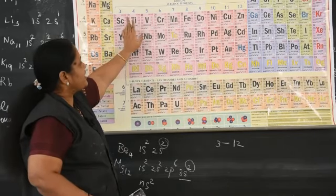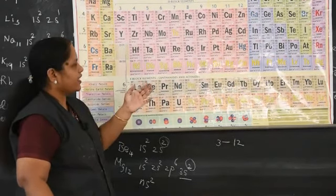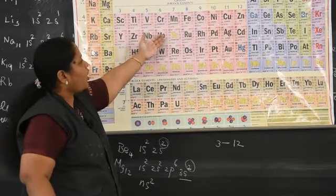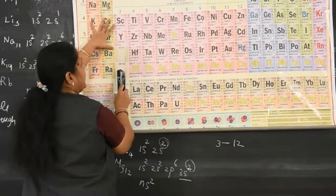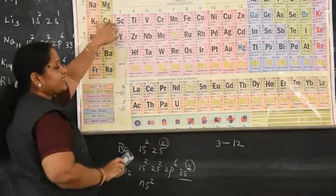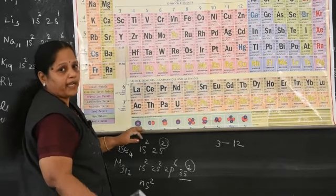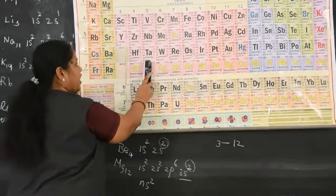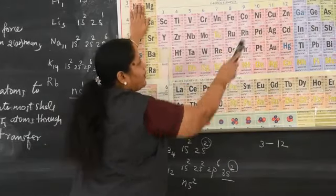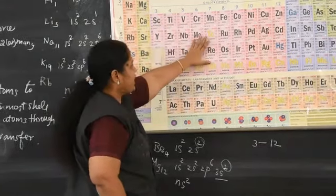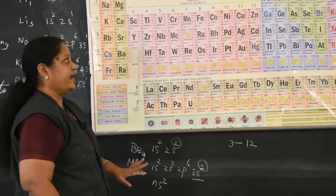D block elements are otherwise called transition elements. The property of D block elements is in between S block and P block elements — that is why they are called transition elements. S block is on the left, P block on the right, and D block properties fall in between.